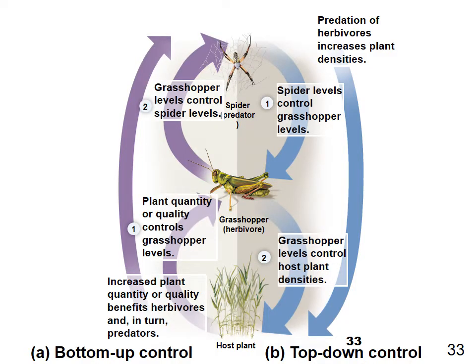A picture illustrates both models using the same three species. In bottom-up control: increased plant quantity benefits herbivores, which benefits the spider. In top-down control: the spider controls grasshopper levels, and fewer grasshoppers means higher host plant density. Both forces can operate simultaneously.